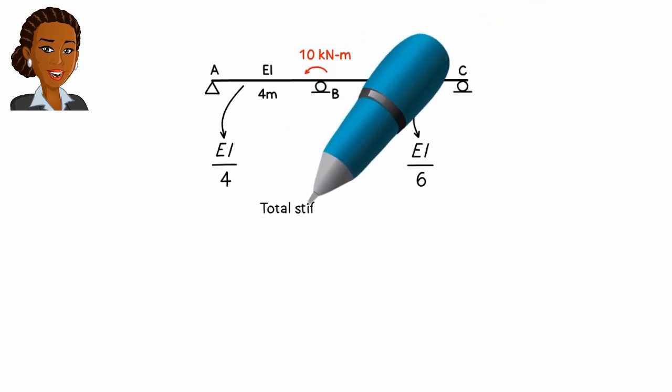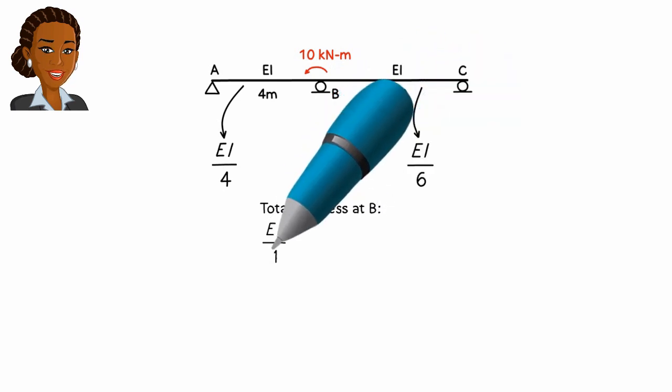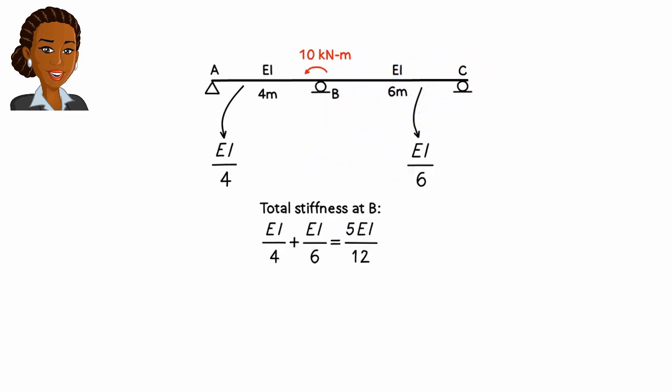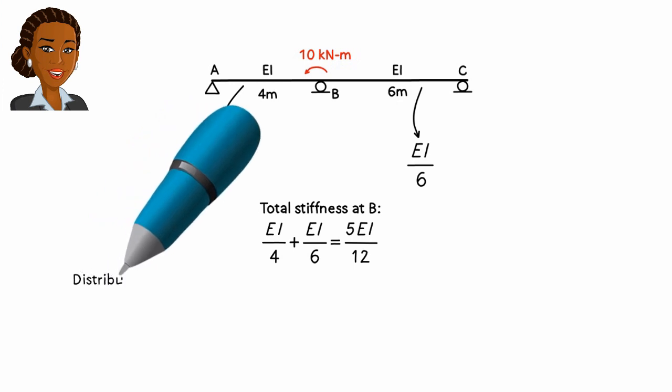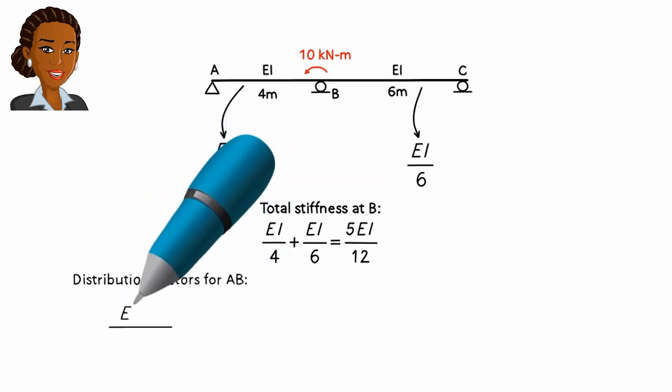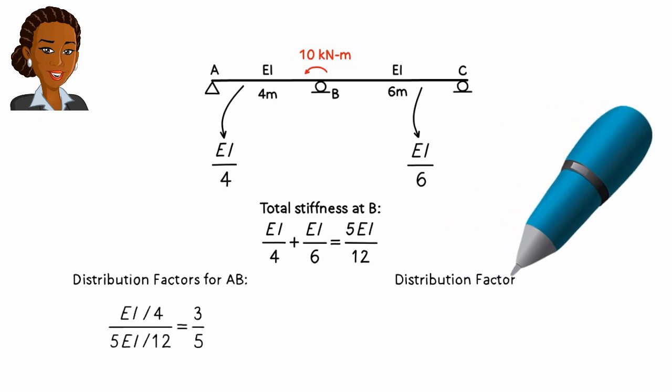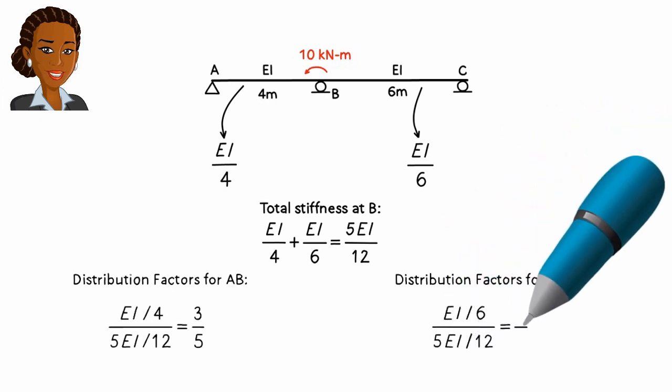The total stiffness at the joint equals the sum of the coefficients for the members connected to the joint. The distribution factors at each joint are calculated by dividing the coefficient for each member by the sum of the coefficients.